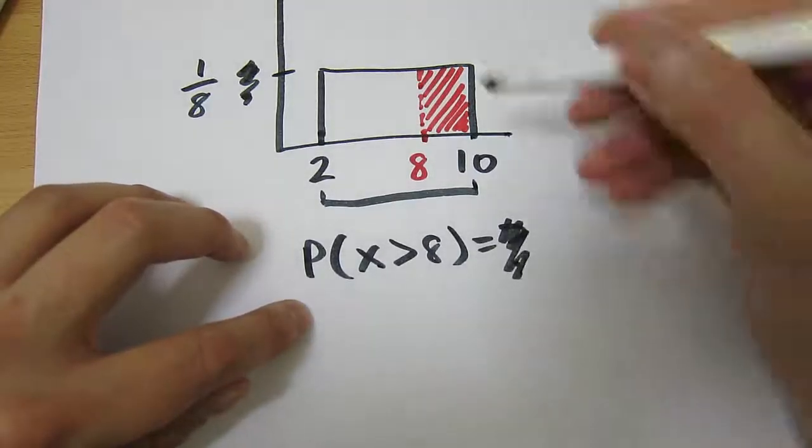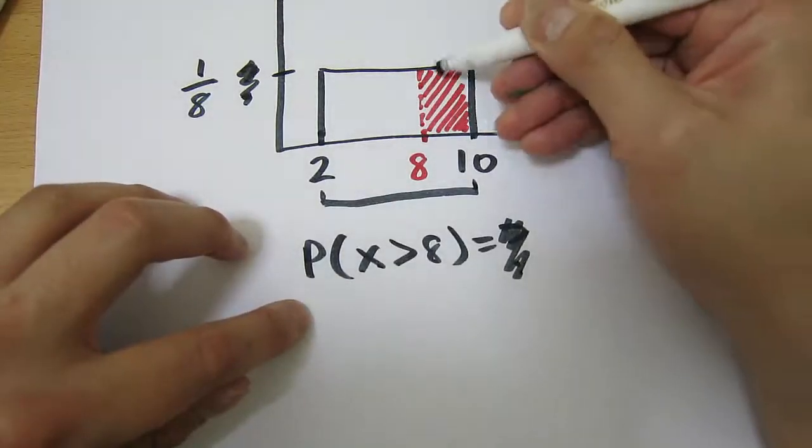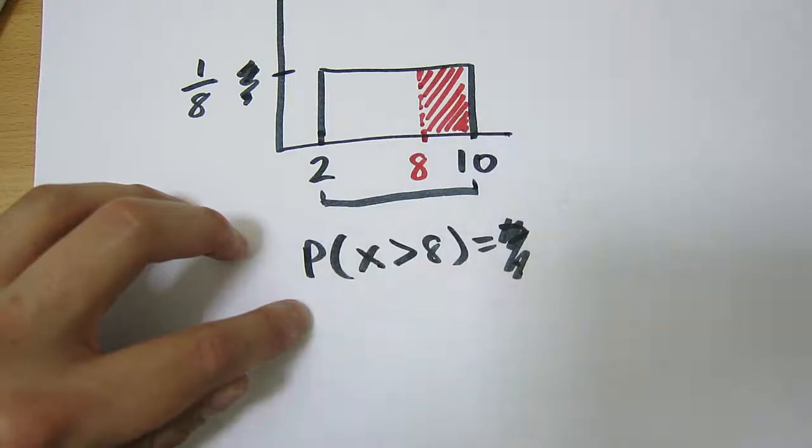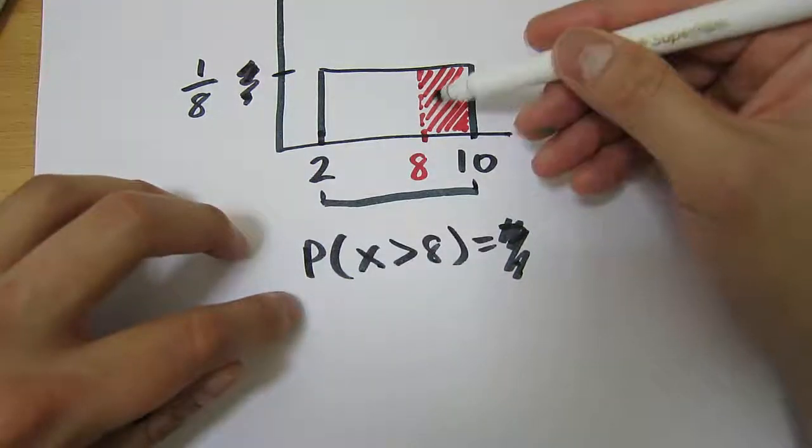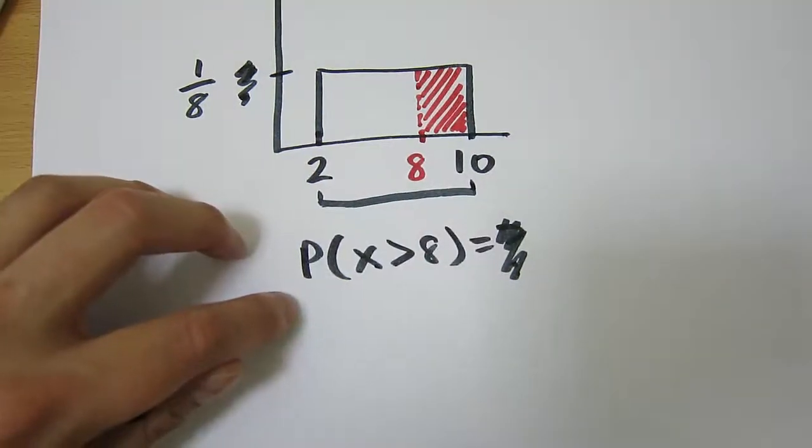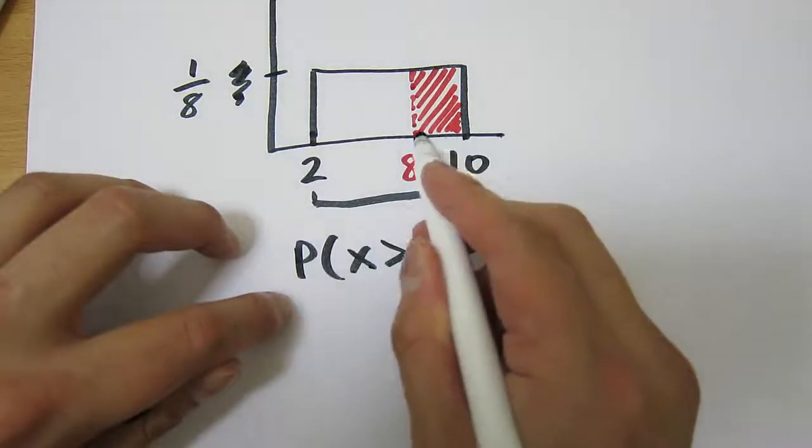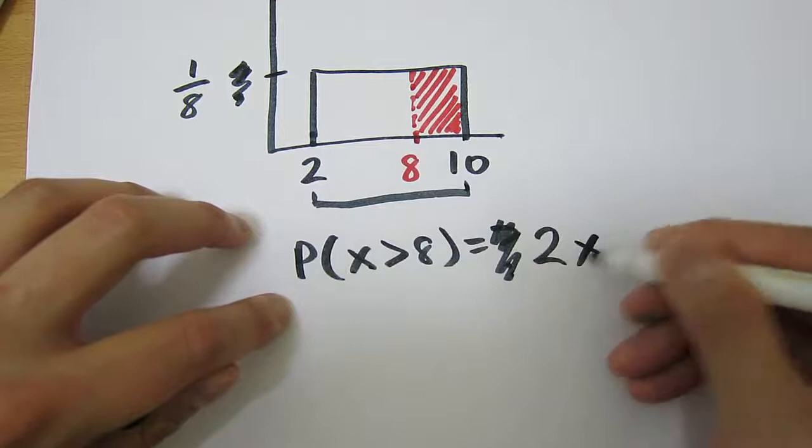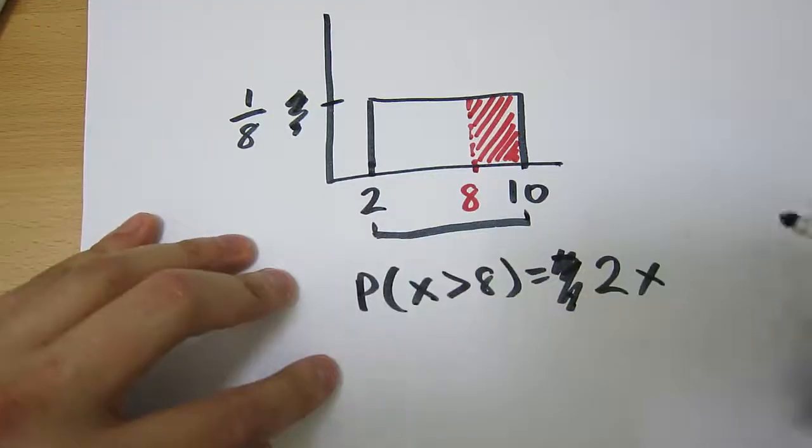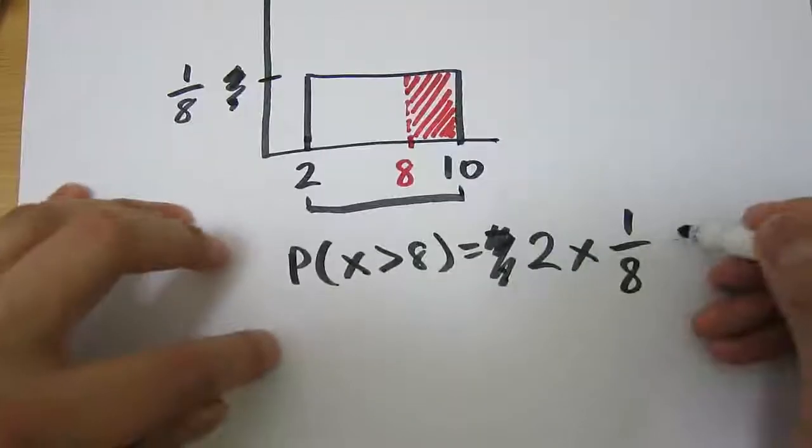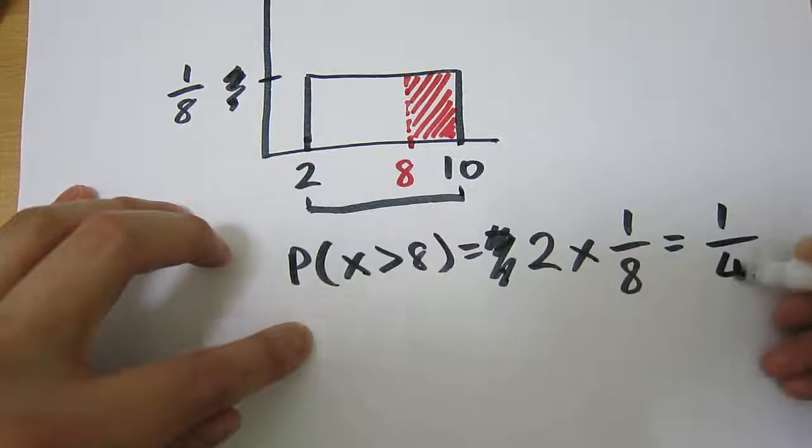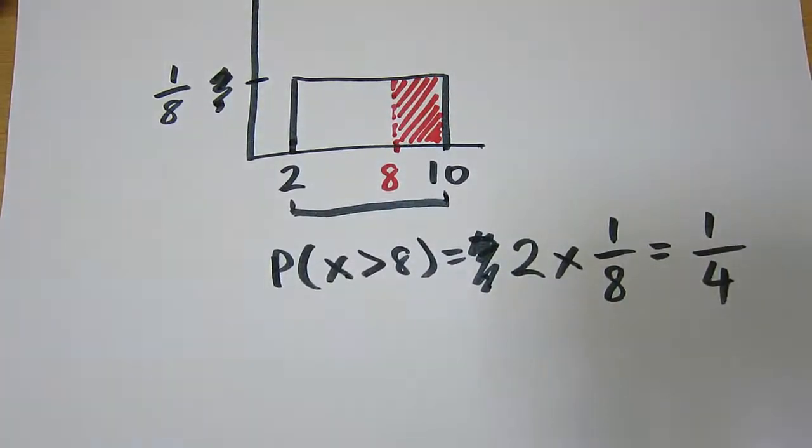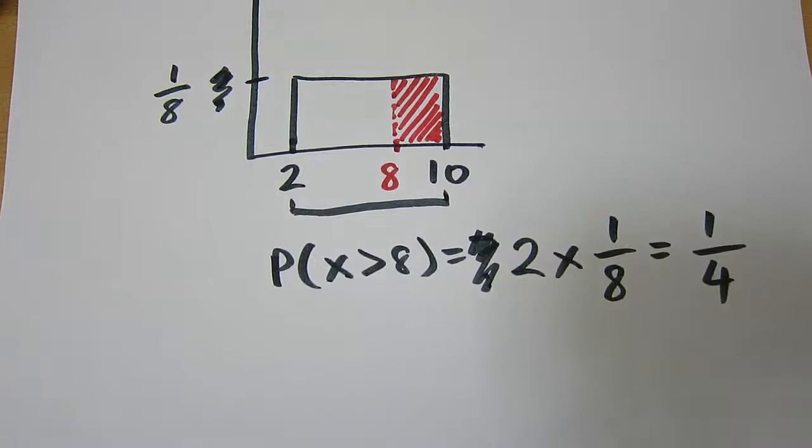So to answer this question here, we now need to know the area inside this red section here, because that gives you the probability that you have to wait for more than 8 minutes at Starbucks. Well, what's the base of this rectangle? Well, that's 10 minus 8, which is 2, times, and what's the height of this rectangle? Well, 1 over 8. Okay, and that's your answer. That's 1 over 4. Okay, so there's a 1 in 4 chance that you have to wait for more than 8 minutes at Starbucks for your coffee.